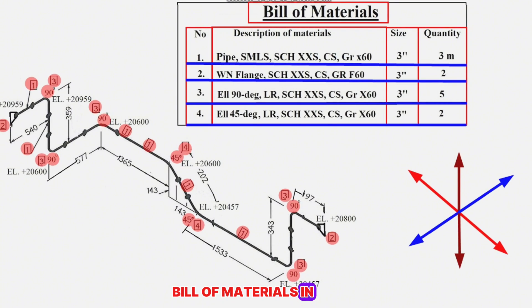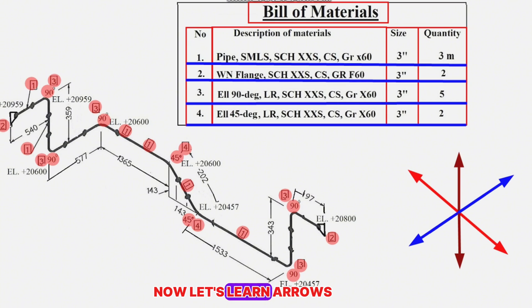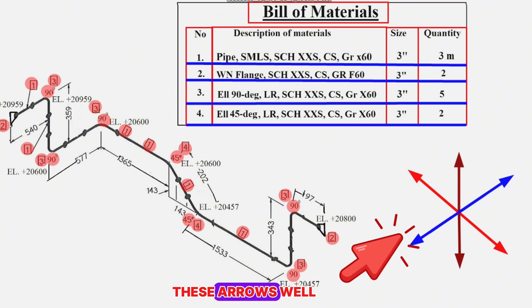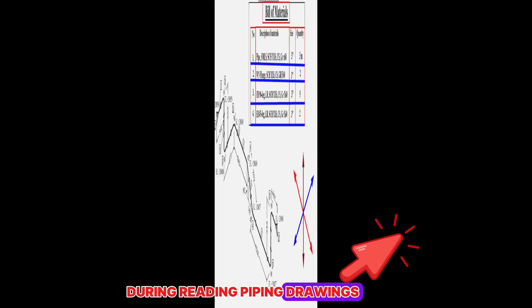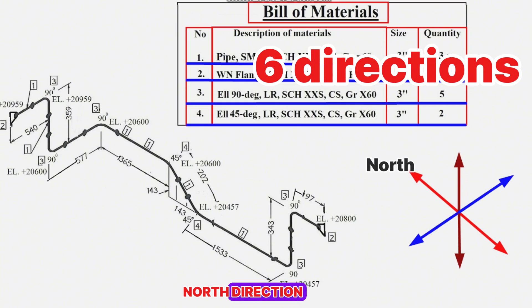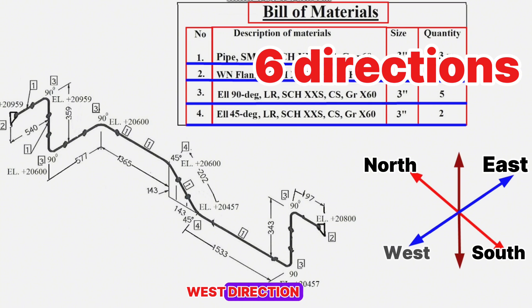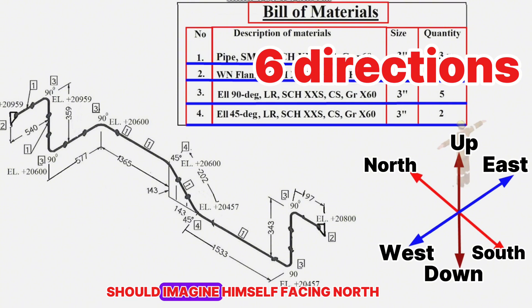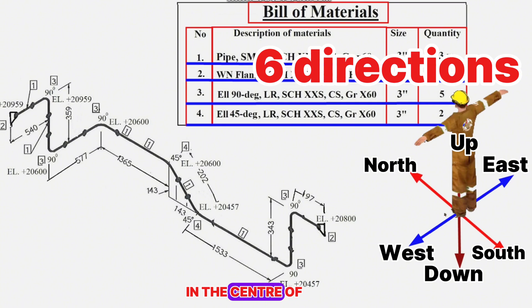Reading the bill of materials in the piping isometric drawing has been successfully completed. Now let's learn the arrows showing directions in the piping isometric drawing. Piping engineers need to know these arrows well. There are six directions: North, South, East, West, Up, and Down. The person reading the drawing should imagine himself facing north, positioned at the center of these directions.